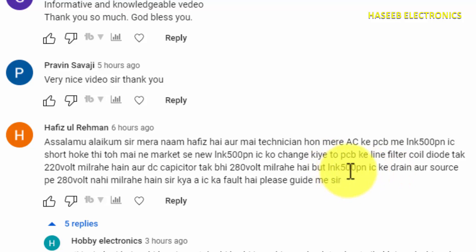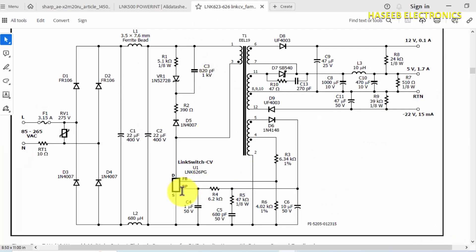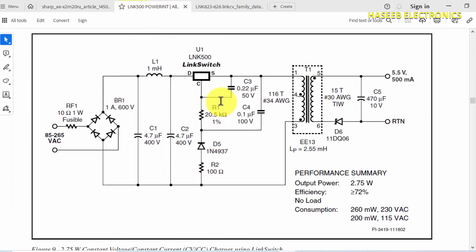First we will see the possible reasons. LNK500 is slightly different than other switching ICs. If we compare normal switching ICs, for example from the same family LNK626, LNK623, if we see closely this is the bulk capacitor, the main DC capacitor, and then it is providing voltage to the transformer primary winding. The primary winding's second end is connected to the drain pin of LNK626.